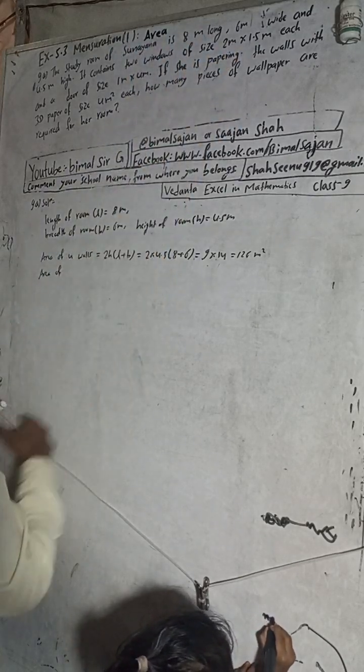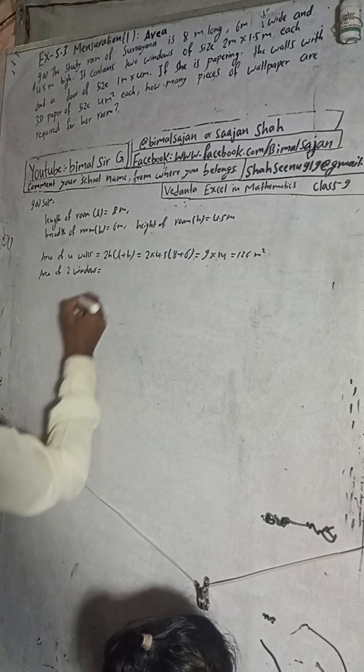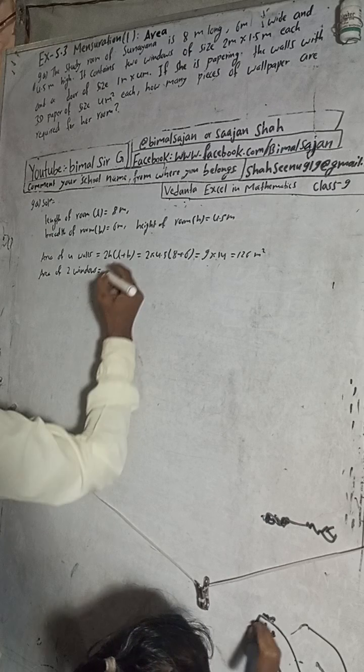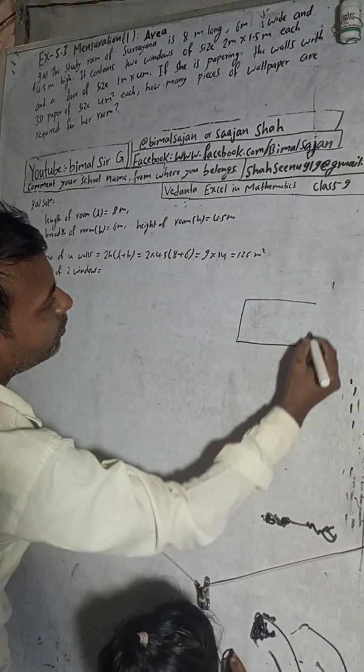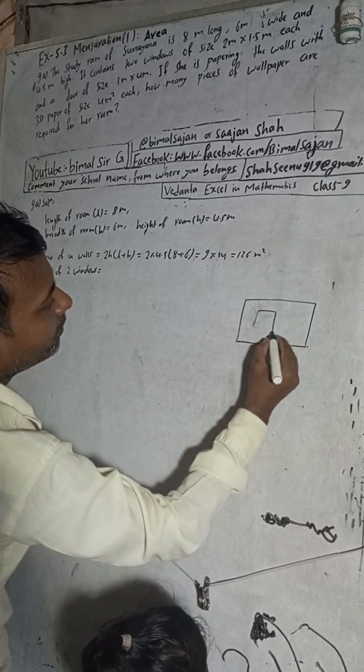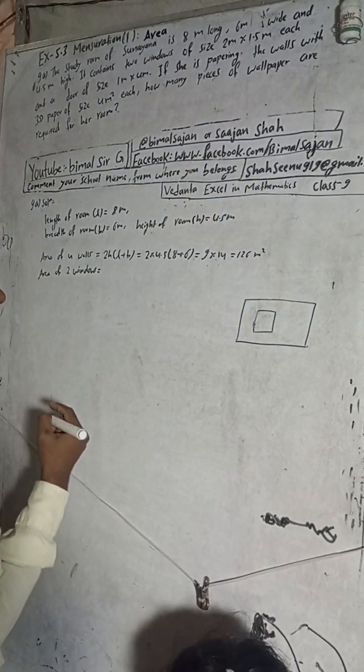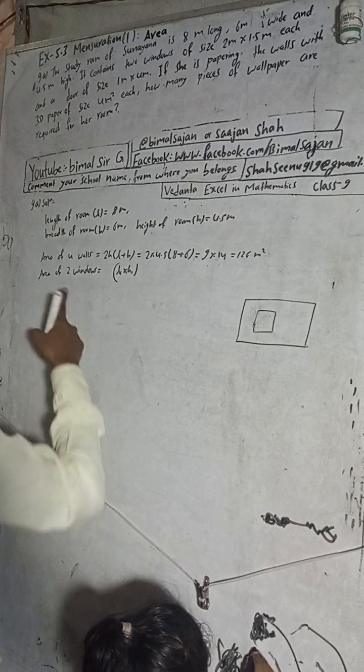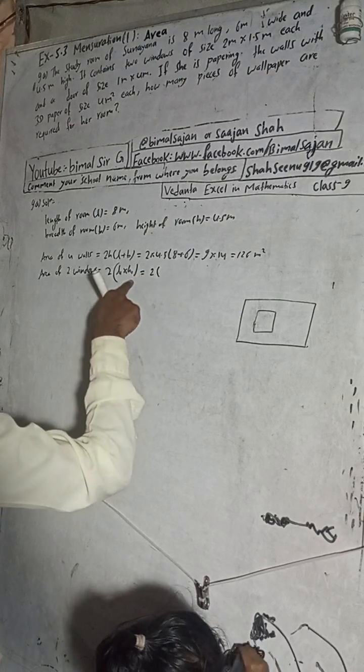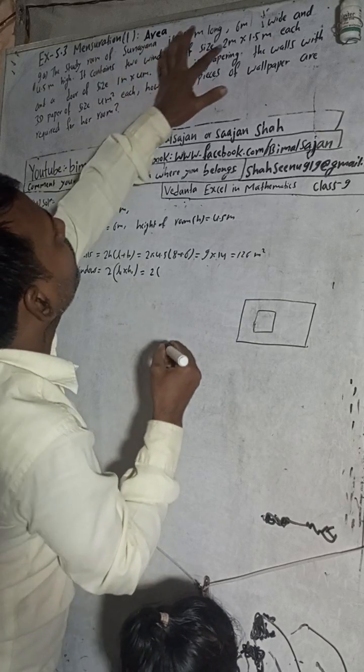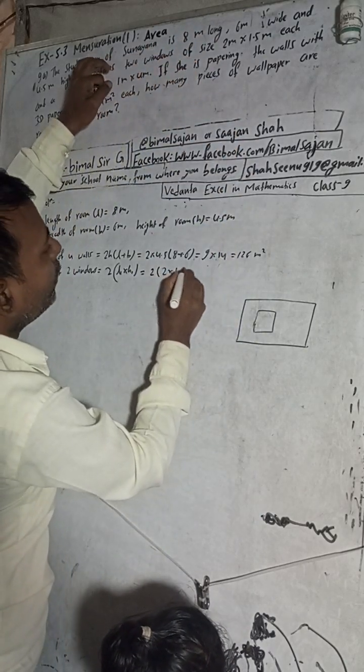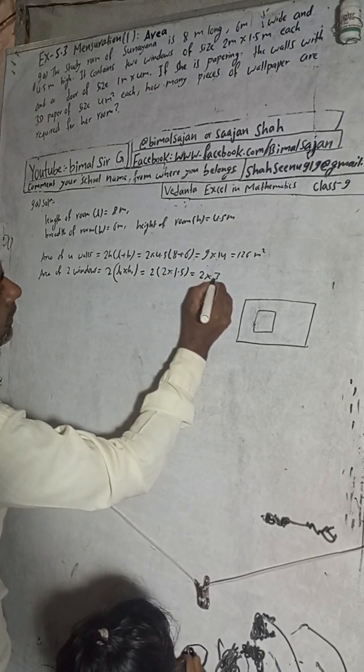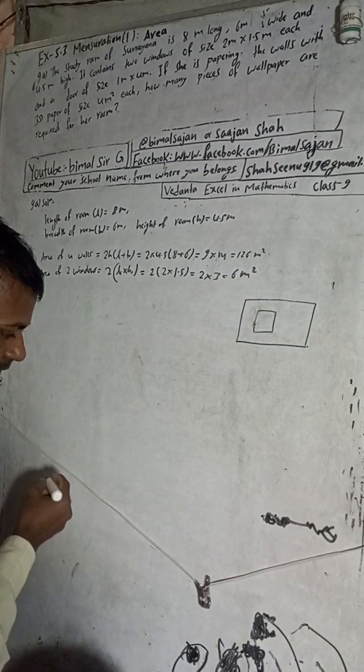Now it contains two windows, so area of two windows is equal to... for one window, suppose this is our room, this is one window and there are two windows. So 2 into, the length is 2 meter of size, so 2 into 1.5. That is equal to 2 into 3, which is 6 meter square.